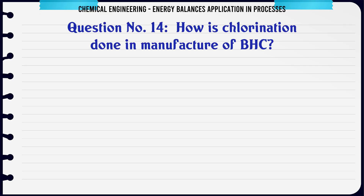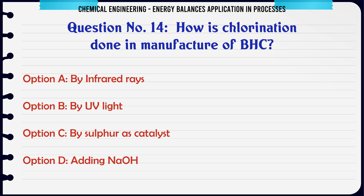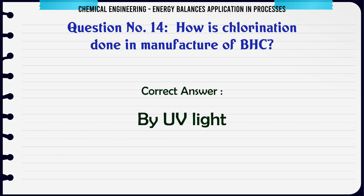How is chlorination done in the manufacture of BHC? A: By infrared rays. B: By UV light. C: By sulfur as catalyst. D: By adding NaOH. The correct answer is by UV light.